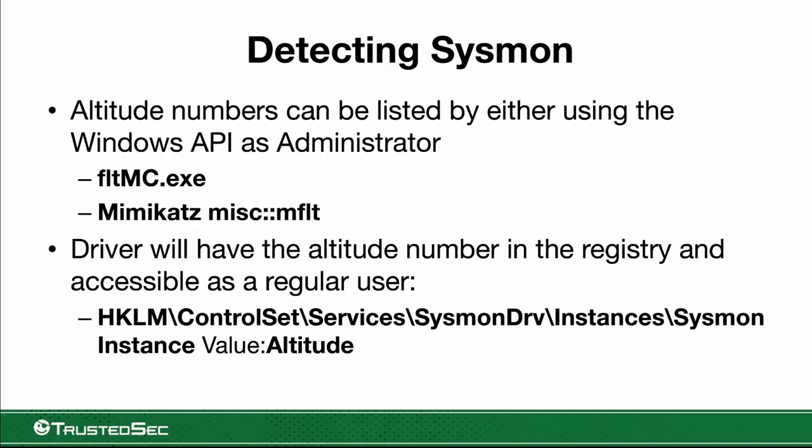If I use fltmc.exe running as administrator, or with Mimikatz in memory, I can use the miscellaneous command MFLT to list all filter drivers and see the altitude number. Some blog posts suggest modifying the altitude number to better hide Sysmon — word of caution: I made the mistake of using the same altitude number as another product and blue-screened the box. So be careful if you decide to use a different altitude number, as you may have other products interact differently with Sysmon and will need extensive testing.